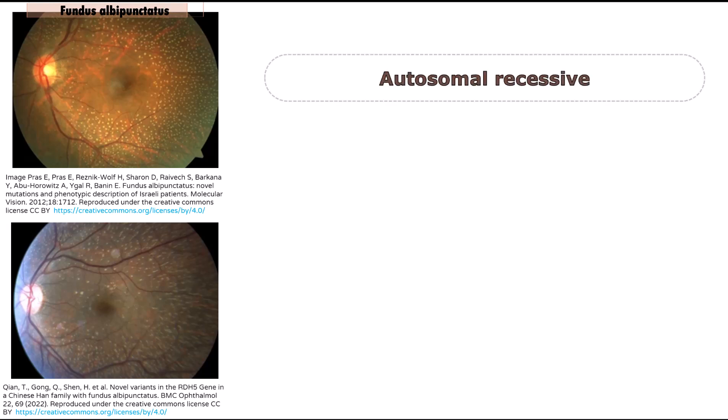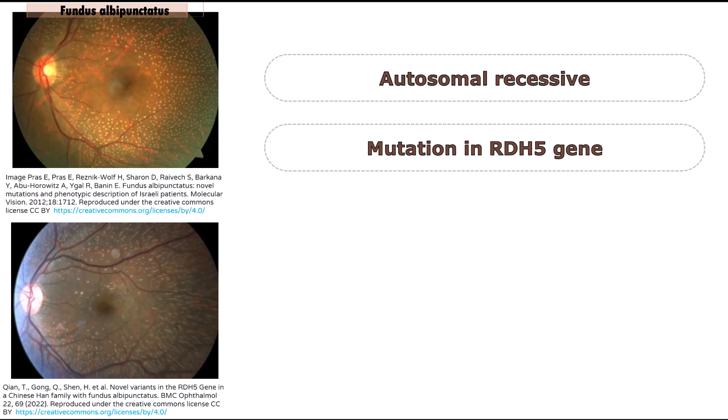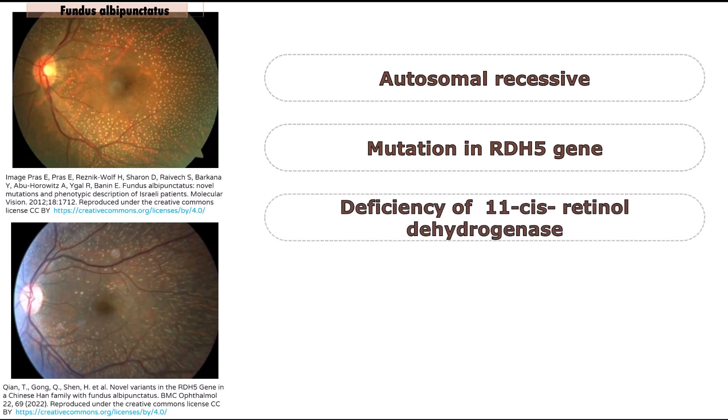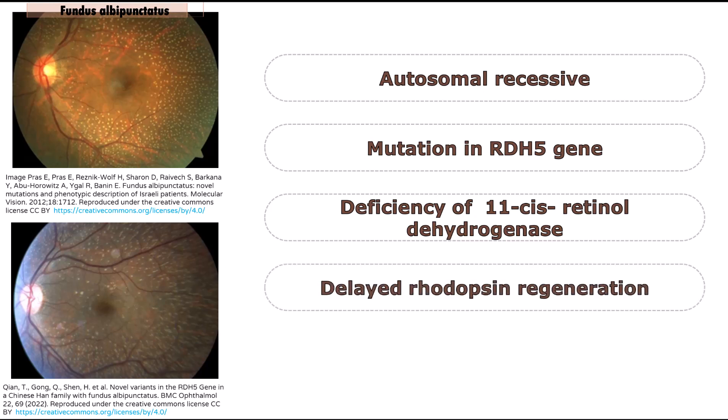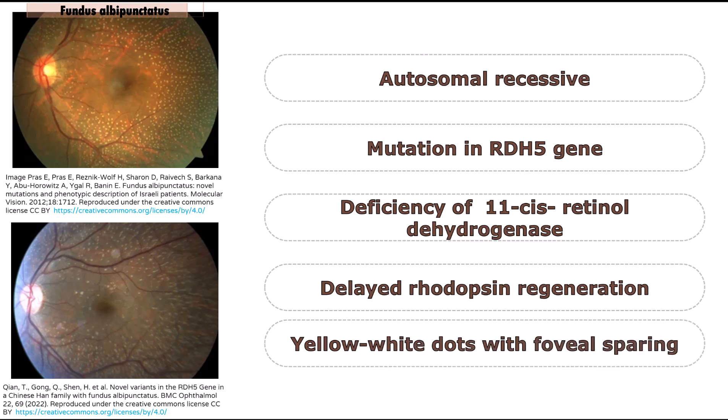It is inherited in an autosomal recessive manner and is due to a mutation in the RDH5 gene, leading to a deficient function of 11-cis-retinol dehydrogenase and consequently delayed rhodopsin regeneration. It is characterized by yellow-white dots in the posterior pole and mid-periphery with foveal sparing.